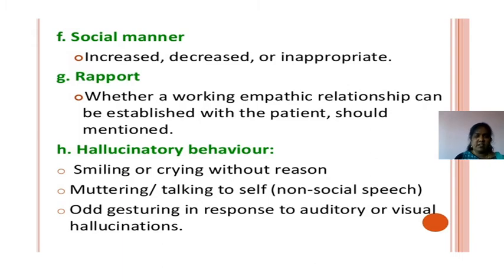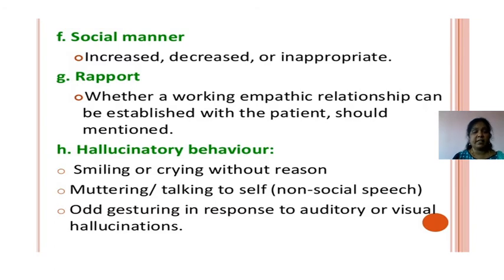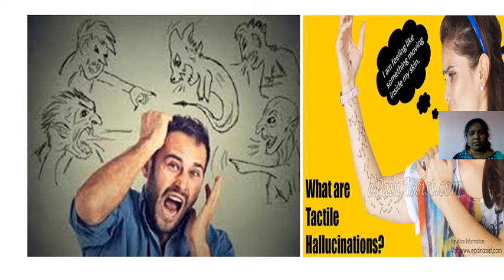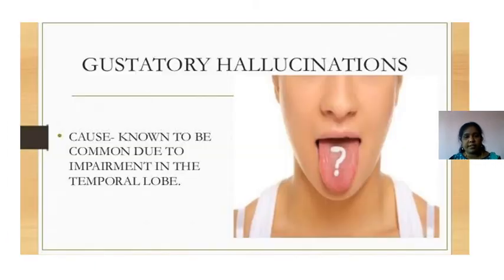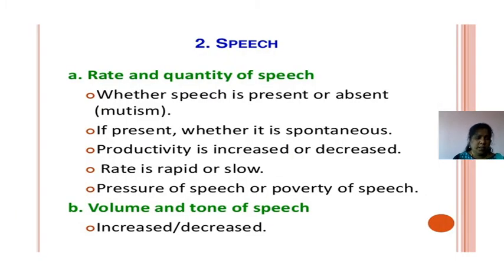Social manner: different types of social manners, increased or appropriate. How the relationship is established with the client or examiner. High-level abnormal behavior: smiling, crying without reason, talking to himself, gesturing, or preoccupation — these come in auditory and visual hallucinations. Visual hallucinations and gustatory hallucinations — gustatory means experiencing different types of tastes.